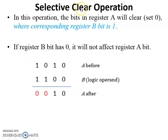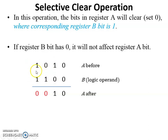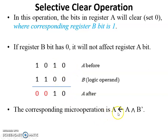The third is selective clear operation. In this operation, the bits in register A will be cleared — set to zero — where the corresponding register B bit is one. For example, the first two most significant bits of B are one, so the corresponding A bits are changed: one becomes zero and zero stays zero. The remaining two bits, where B bit is zero, are not affected and remain as-is. So it performs A AND (complement of B).